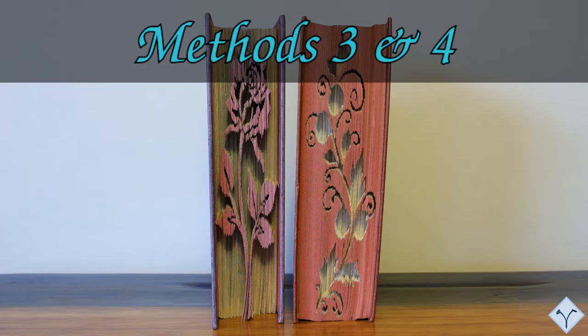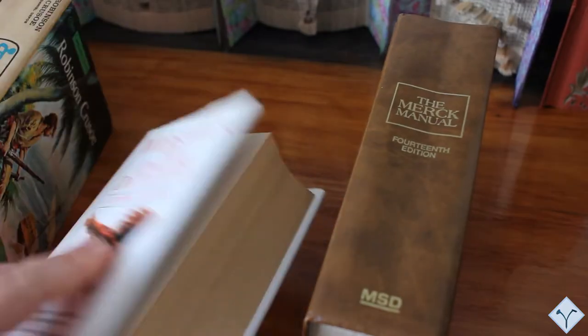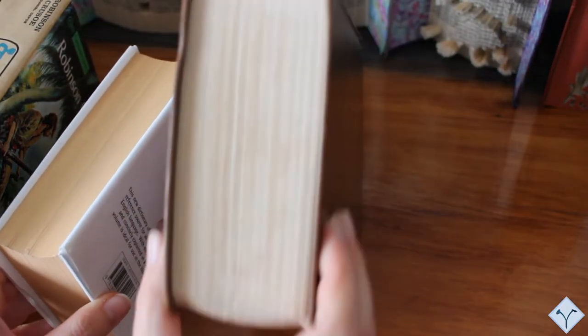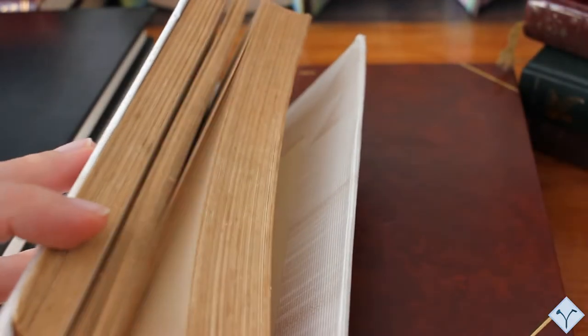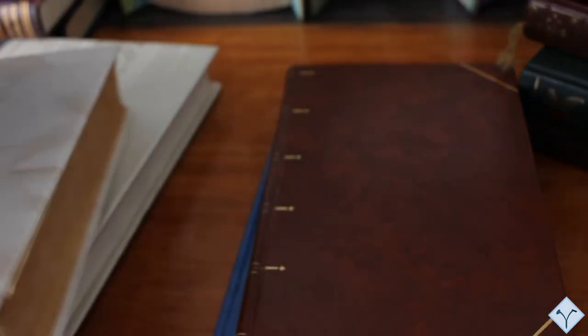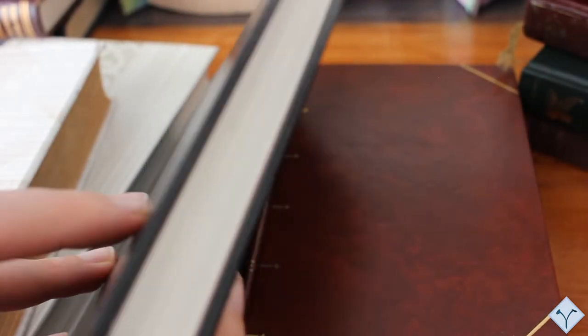For methods three and four, that is the cut-only methods, always choose thick books. The thicker, the better. Methods three and four do not change the original thickness of the book through the process. So if your book is thin, the subject of the pattern will also be thin, meaning elongated, and that may not be the desired effect.